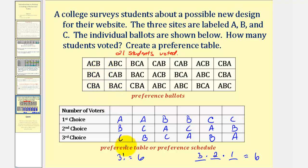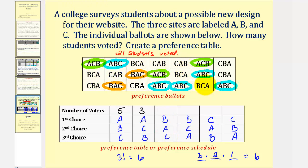And now we'll count the number of votes for each particular order. Let's begin by looking for the order of A, B, C. There's one, two, three, four, and five. Now we'll look for A, C, B. There's one, two, three. So there's three voters for the order of A, C, B. Now we'll look for B, A, C. There's one, two. Looks like there's only two. And now we'll look for B, C, A. There's one, two, three, and four.